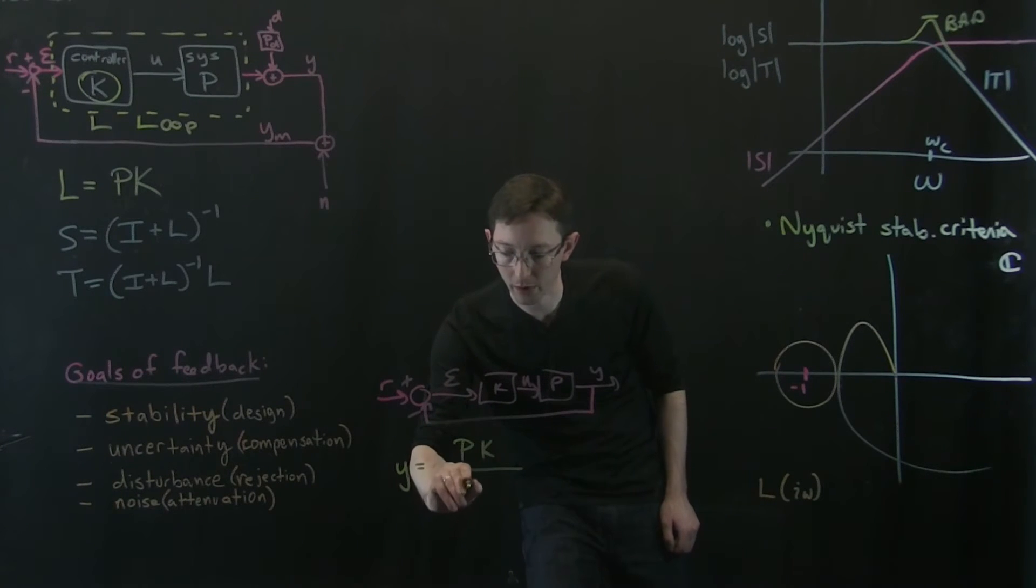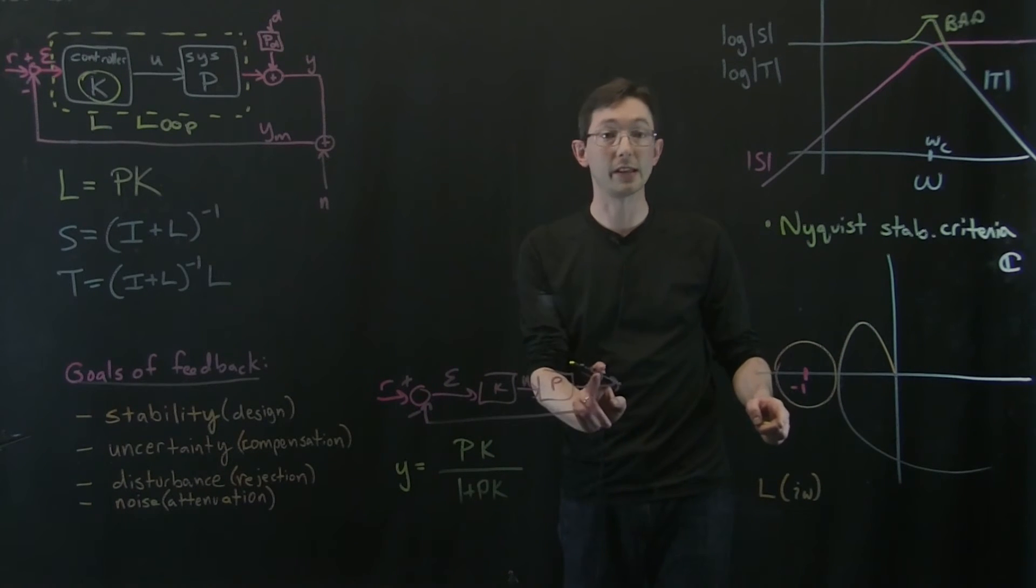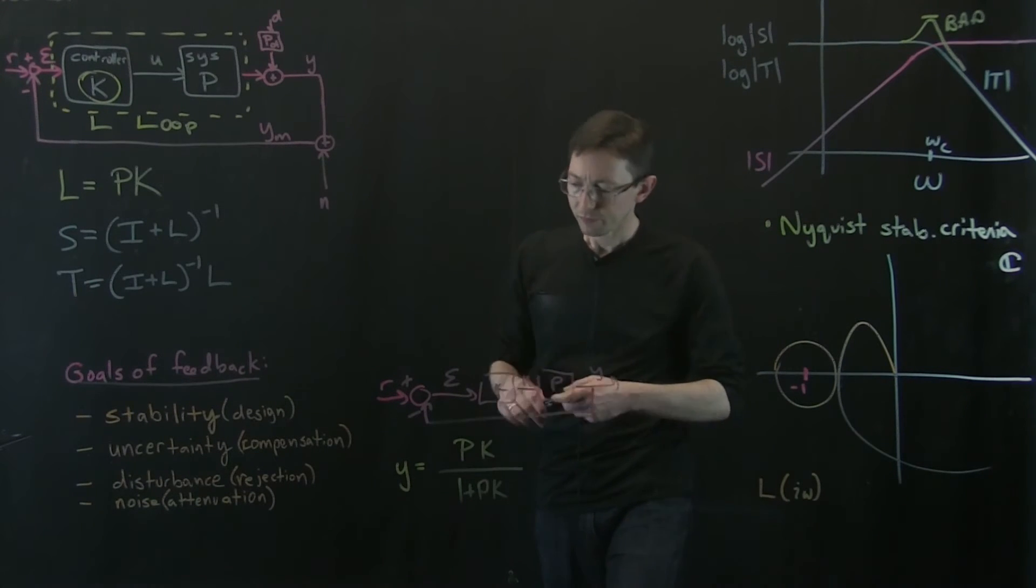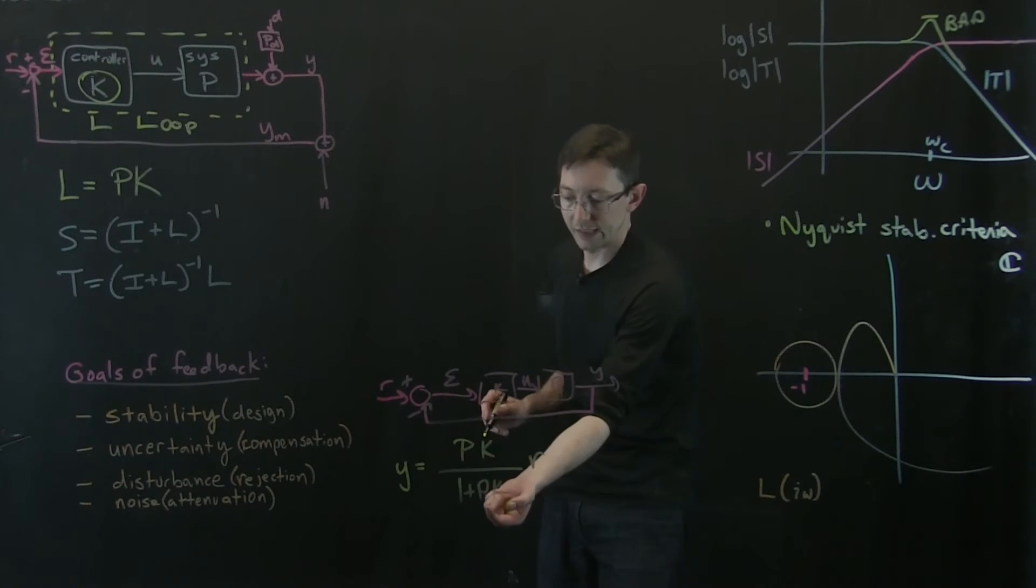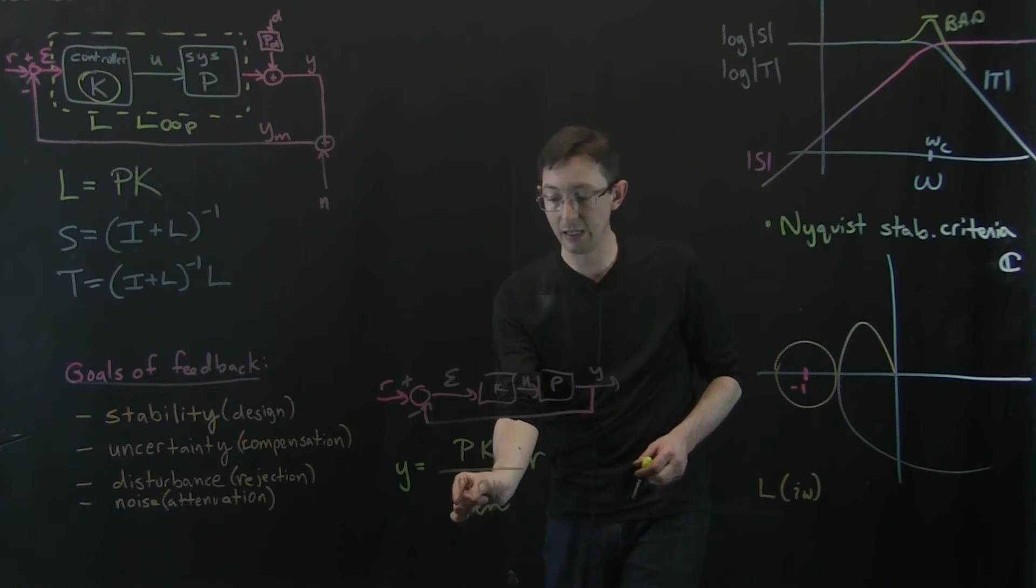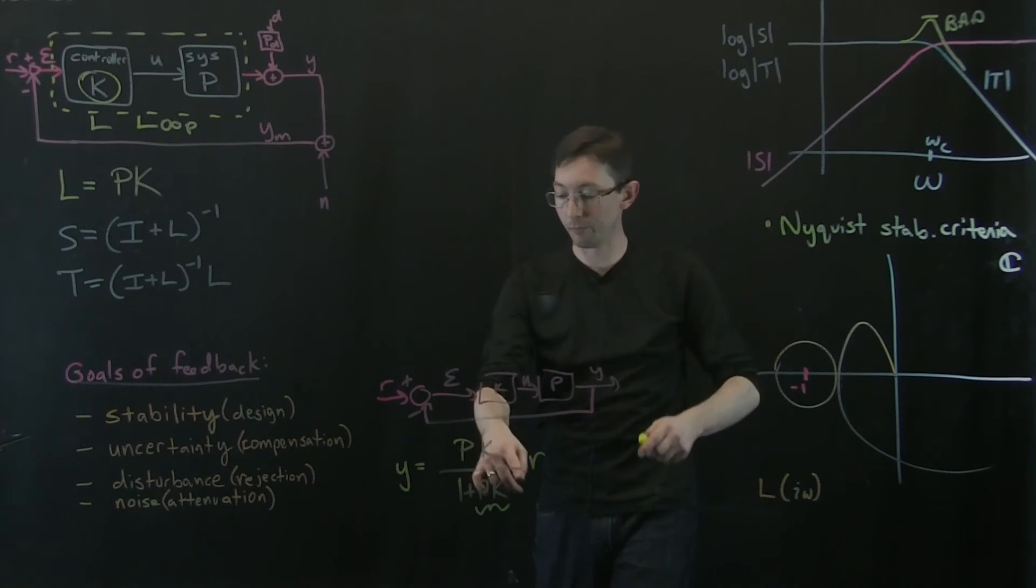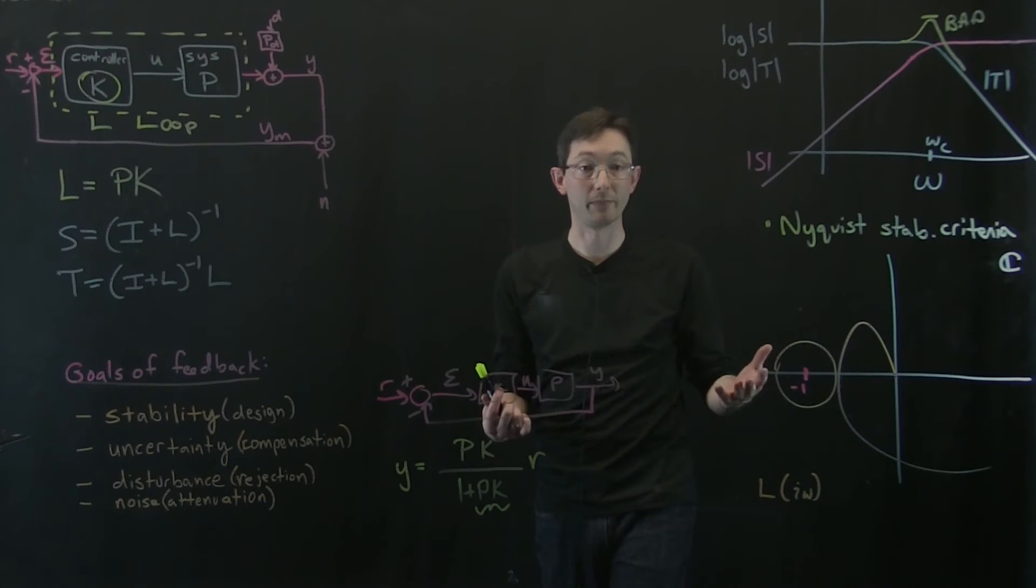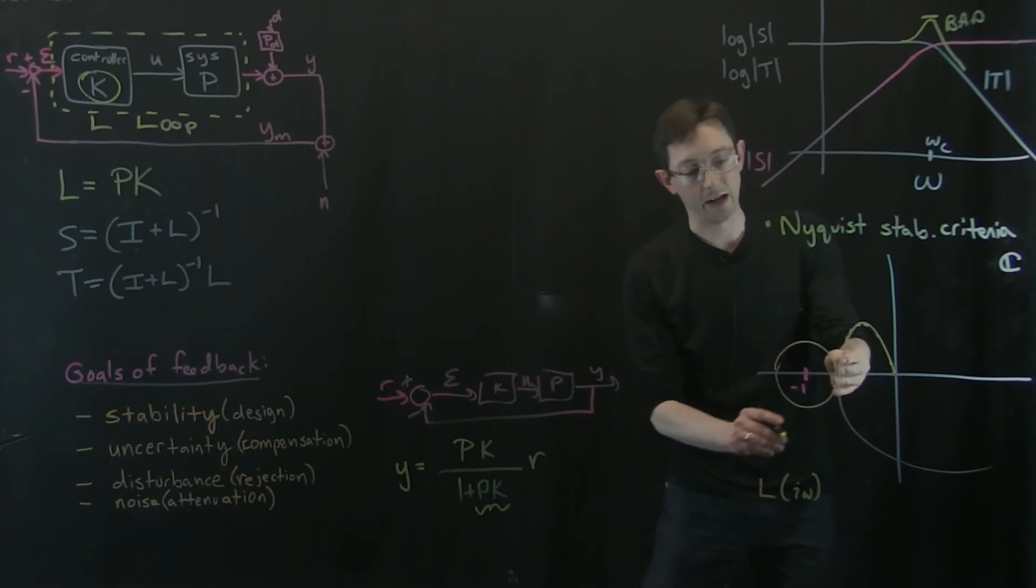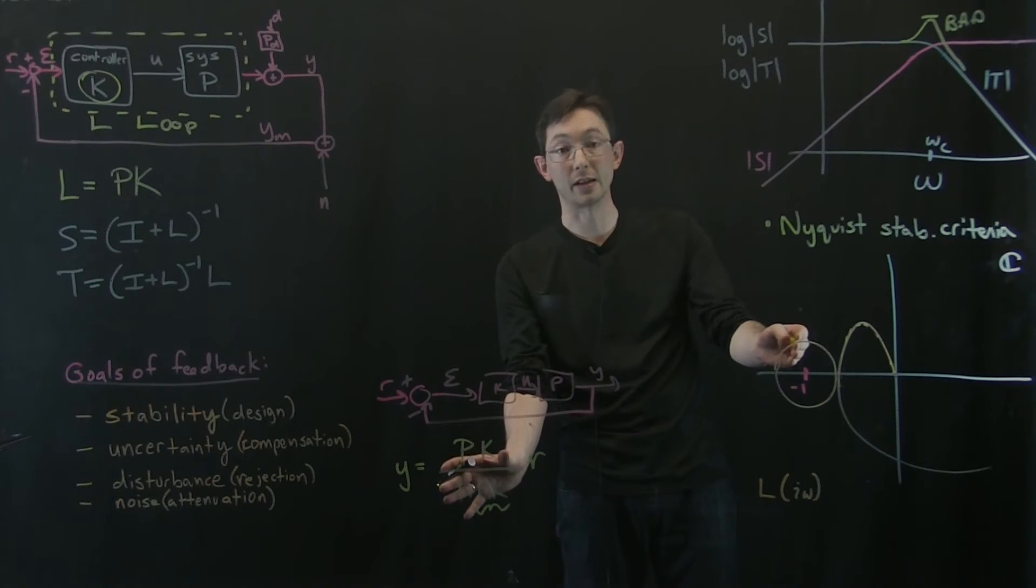PK over 1 plus PK. Now, I'm drawing this for a single input, single dimensional u, single output, single dimensional y system. So this is just, I can do these divisions. And now you can see that if this PK, if my loop transfer function equals negative one, if PK equals negative one, if my loop transfer function L passes through negative one, boom, the system blows up at that frequency. So at whatever frequency, right, this is parameterized by frequency omega. And if I increase the gain K so that this passes through negative one, boom, the system immediately goes unstable.